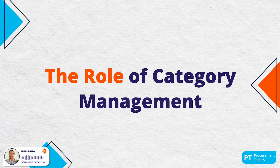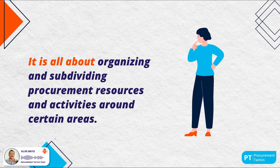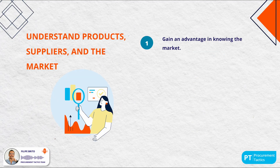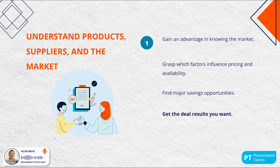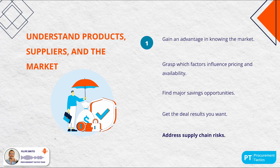Category management plays a key role in procurement by organizing and subdividing procurement resources and activities around certain areas. It helps category managers focus on understanding products, suppliers and market conditions. By segmenting procurement into specific categories, managers develop deeper expertise in each area, leading to more informed decision-making and strategic sourcing. Procurement teams that deploy category management strategies can anticipate changes, identify cost savings opportunities, negotiate better terms with suppliers and manage risks associated with supply chain disruptions.